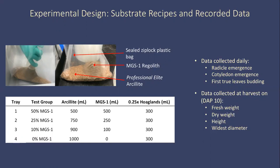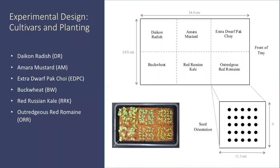During growth, we collected data daily for radical emergence, cotyledon emergence, and first true leaves budding. At 10 days after planting, we harvested and collected fresh weight, dry weight, height, and widest diameter. We planted 25 seeds for each of the following cultivars: daikon radish, amara mustard, extra dwarf bok choy, buckwheat, red Russian kale, and Outredgeous red romaine.